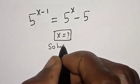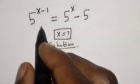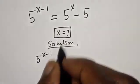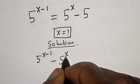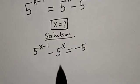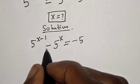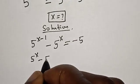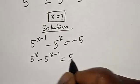Solution. This is 5 raised to power x minus 1. Let's bring this 5 raised to power x here. Minus 5 raised to power x is equal to minus 5. Now let's rearrange this. We have 5 raised to power x minus 5 raised to power x minus 1 is equal to 5.